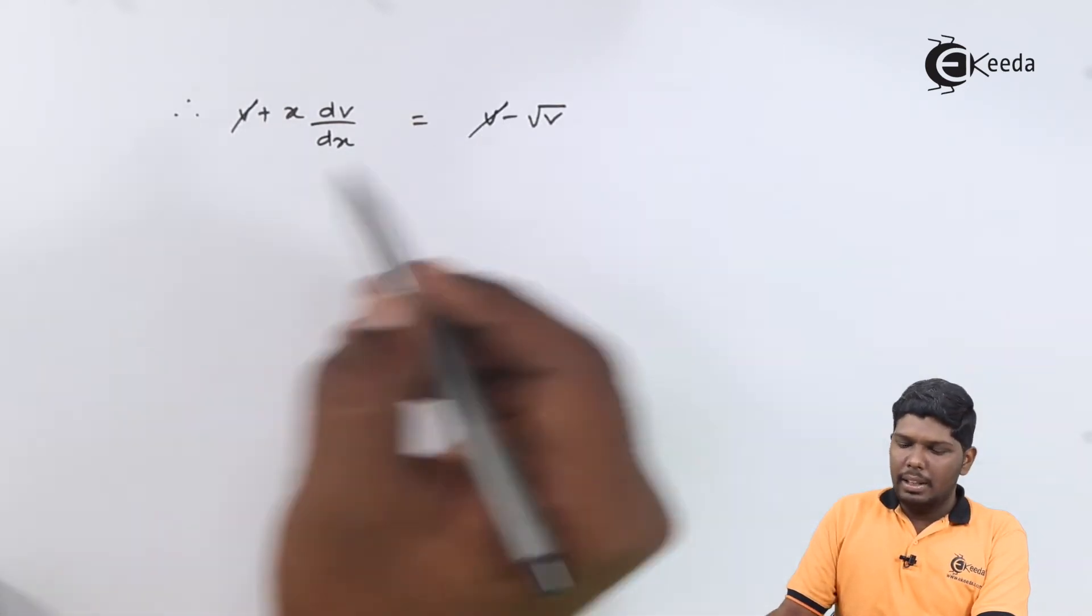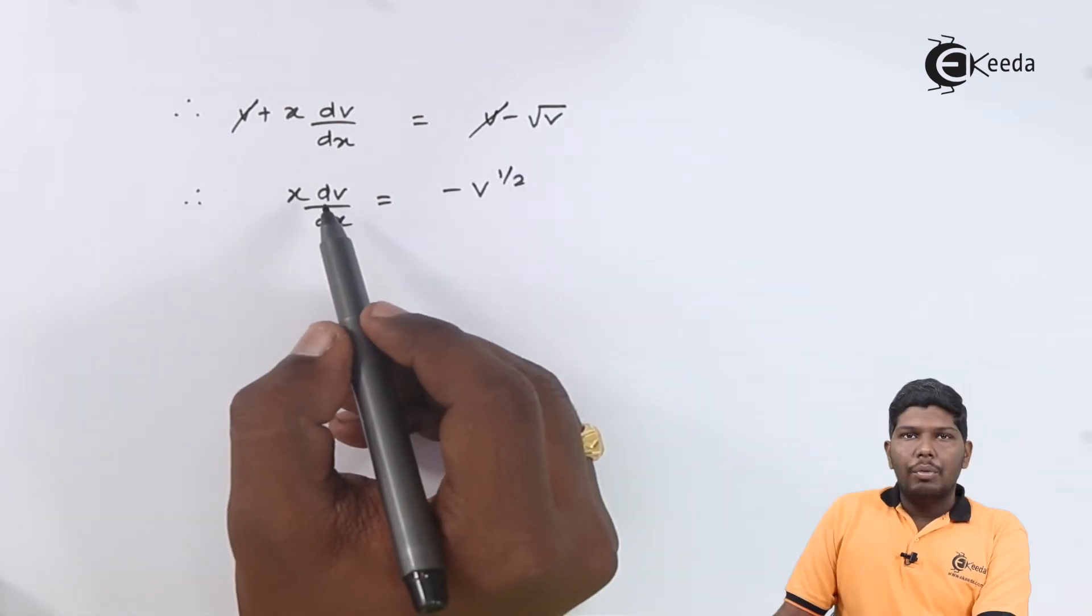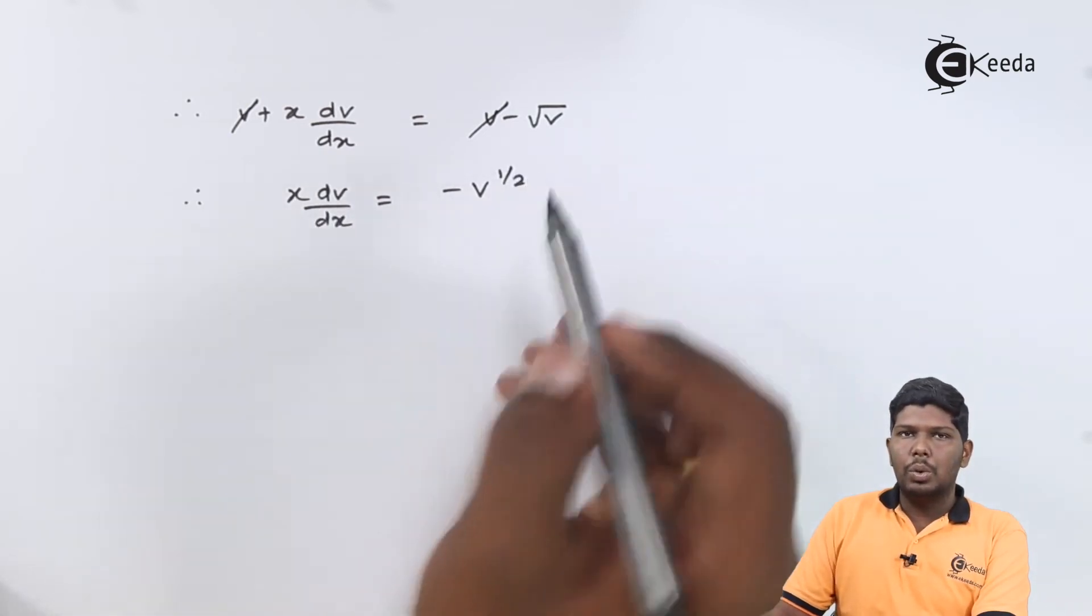The remaining part will be v plus x dv by dx is equal to v minus root v. Now, again, plus v will be cancelled. Here, we have x dv by dx is equal to minus v raise to half.